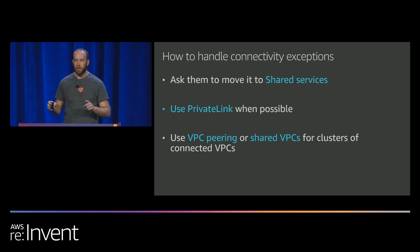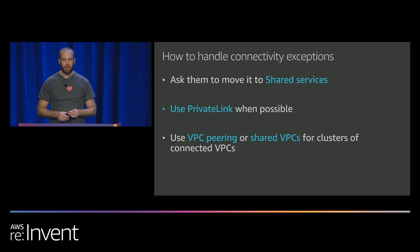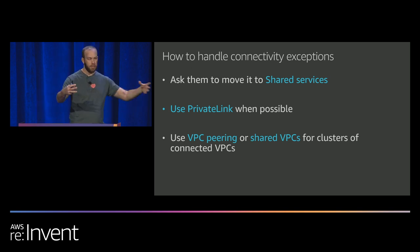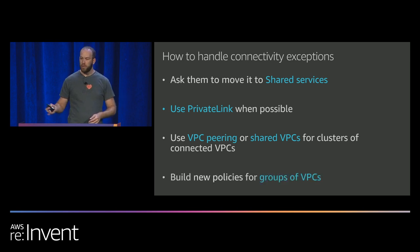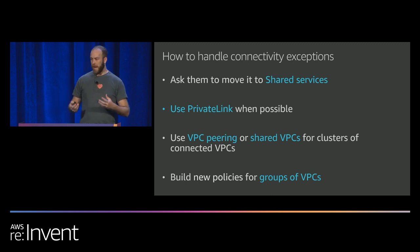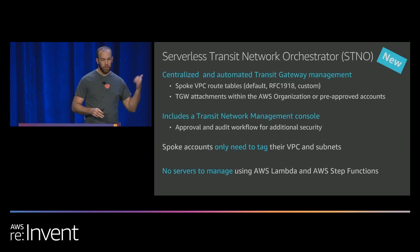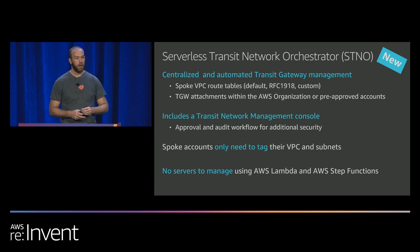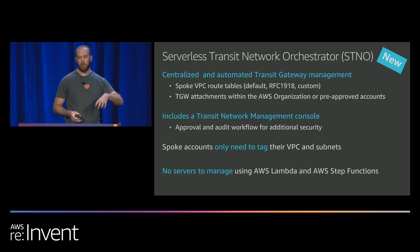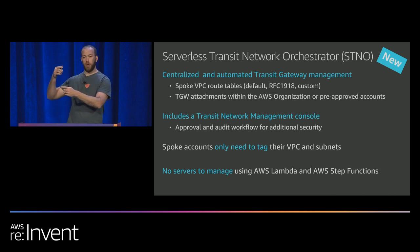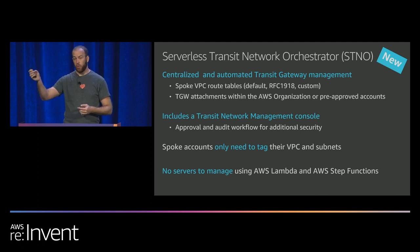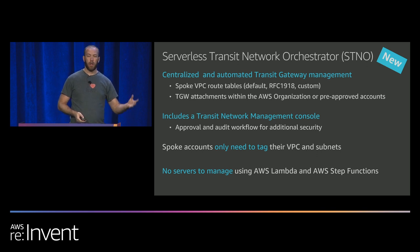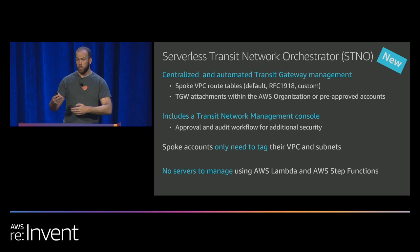Options: ask them to move it. Or use PrivateLink and VPC peering. If you're doing a lot of VPC peering and exceptions, look at shared VPCs — maybe bundle all those things in one VPC. We released something two weeks ago called STNO — you can search for AWS STNO. It's a management and orchestration tool you run via a CloudFormation template in your own account. It allows you to have a management console, automate attachments to your VPCs, automate inserting routes into VPCs so you don't manage static routes everywhere, and gives you a place to audit and control workflows for attaching new VPCs. It's all serverless — all Lambda.